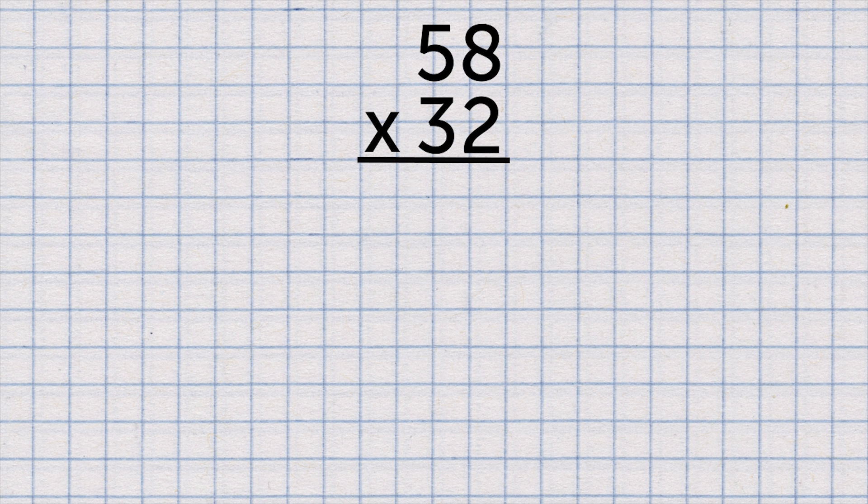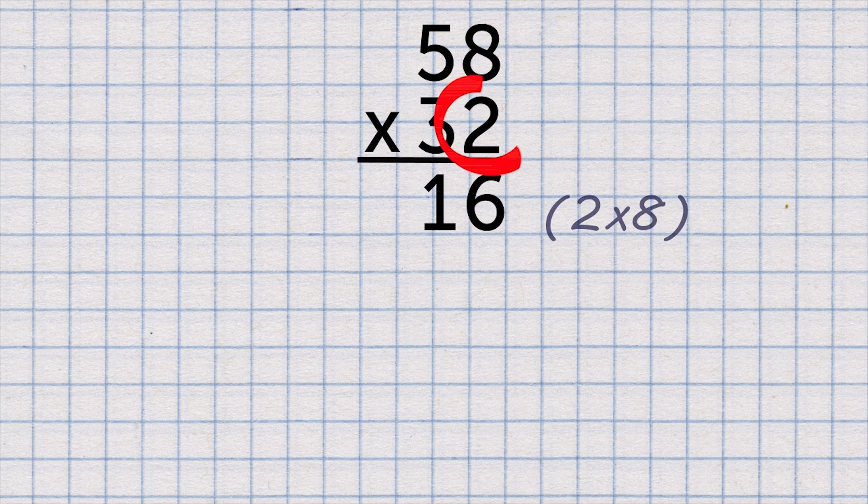Write the numbers in columns, making sure the tens and ones are aligned. Start by multiplying 2 by 8. That's 16. Then 2 times 50. 100.